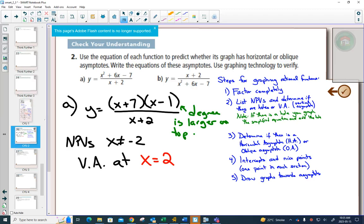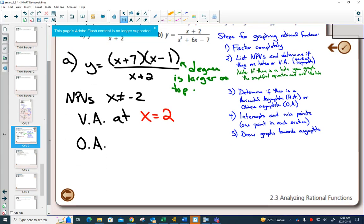If your degree is bigger in your numerator and nothing has simplified, in this case it hasn't, we will have an oblique asymptote. To find your oblique asymptote, you need to use synthetic division.